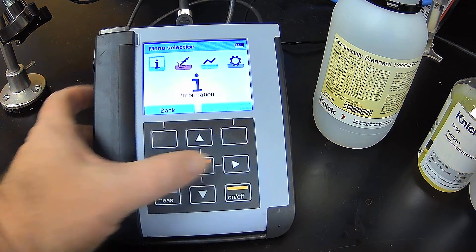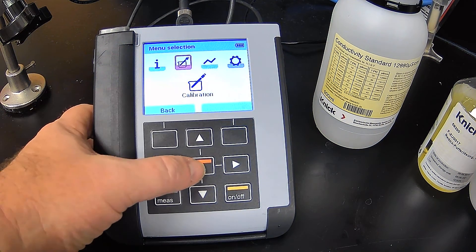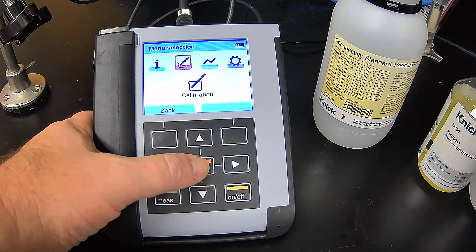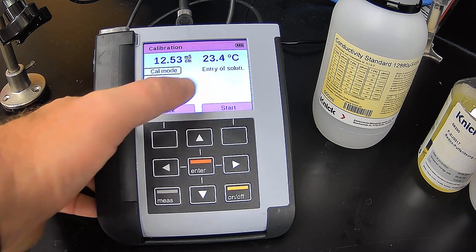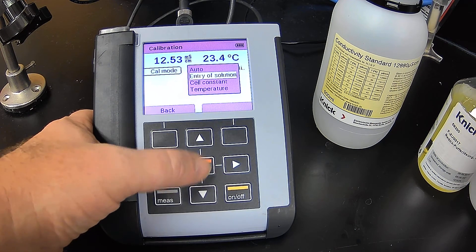So to do a calibration, I hit menu, then right arrow until I see calibration. I press enter. Cal mode - entry of solution. You can do auto, you can do cell constant temperature. We're going to do entry of solution. Then we hit start.